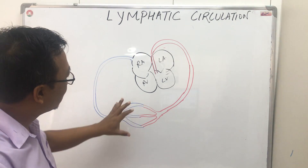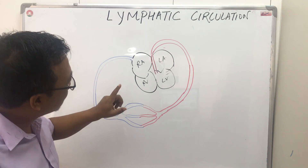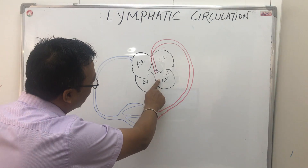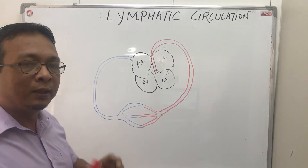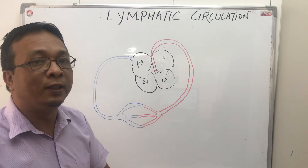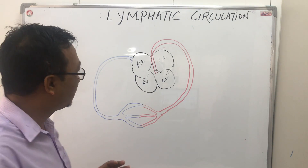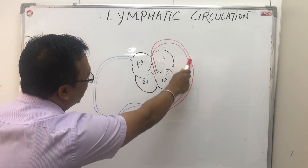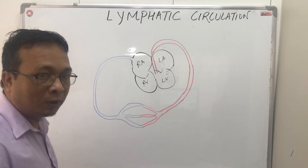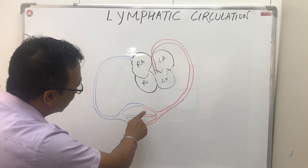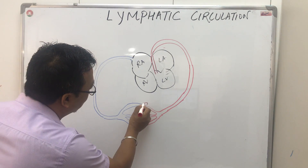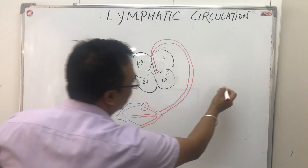Now let's try to understand this: once the blood goes out of the left ventricle, it goes out at high pressure — we know that the systolic blood pressure is 120 millimeters of mercury. So this blood goes out at high pressure, and then these arteries break down into small capillaries. What happens in those small capillaries? Let's zoom into that part.